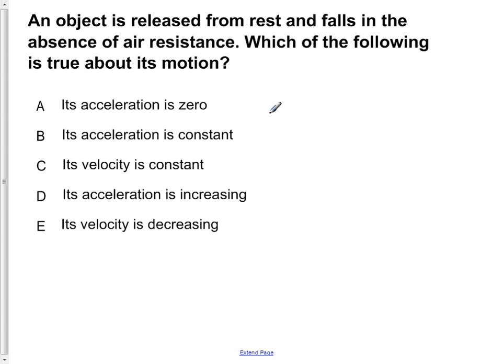An object is released from rest and falls in the absence of air resistance. Which of the following is true about its motion? A. Its acceleration is zero. B. Its acceleration is constant. C. Its velocity is constant. D. Its acceleration is increasing. Or E. Its velocity is decreasing.